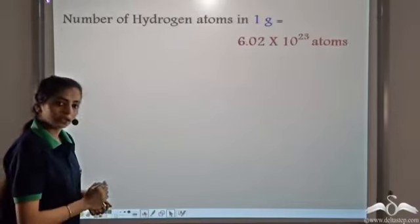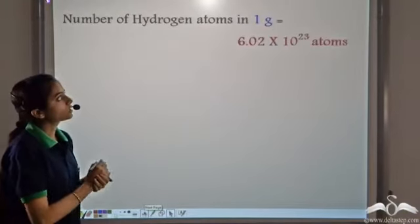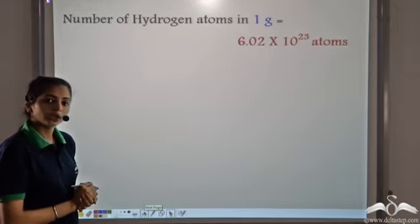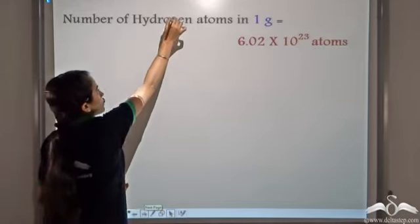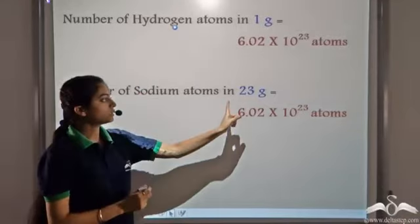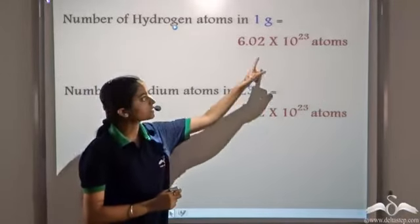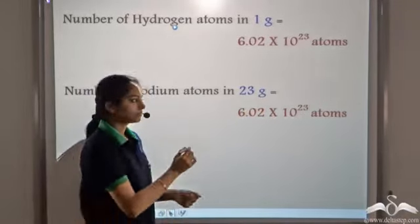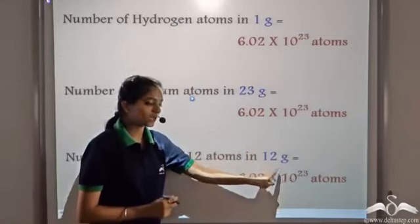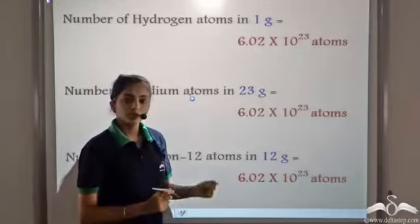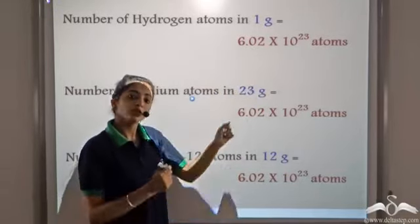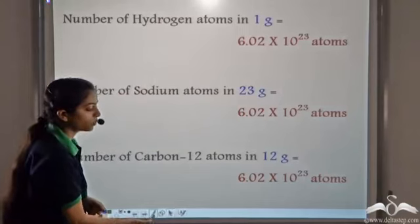Let's look at these three results together. The number of hydrogen atoms in 1 gram is 6.02 × 10²³. The number of sodium atoms in 23 grams is the same number. And the number of carbon-12 atoms in 12 grams is again the same number. So this is a very special number which in chemistry is known as a mole.